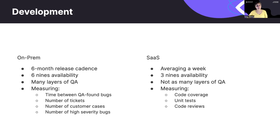In terms of SaaS, we are a microservice architecture, and it really depends on the team that owns the microservice how often they want to release to production. We roughly average once a week pushing to production. We are running on the cloud, so we have restrictions on our SLAs and availability based on what the cloud provider promises — we have three nines of availability. We don't have as many layers of QA, so developers have added responsibility for ensuring quality. We rely a lot more on unit tests, which is something I didn't have the luxury to do when I worked on-prem.